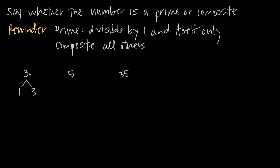If we try to divide 3 by any number larger than 3, we're going to get a decimal answer. And if we try to divide 3 by a number between its factors — for example, divide 3 by 2 — we're going to get a decimal answer. When we're talking about prime and composite numbers, we only consider positive whole numbers. So the only factors of 3 are 1 and 3, which means that 3 is a prime number.